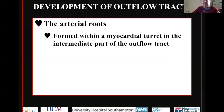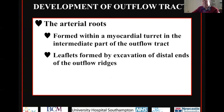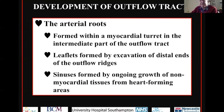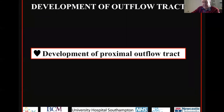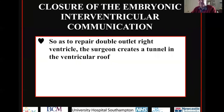To summarize what I've shown about the intermediate outflow tract: the intermediate part forms the arterial roots within a turret of persisting myocardium. Only with ongoing development does that myocardium eventually disappear. The distal margins of the ridges remodel by excavation to form the valvar leaflets, while the sinuses are formed by ongoing growth of non-myocardial tissues from the heart-forming areas within the pharyngeal mesenchyme, occupying the area that initially was myocardial.